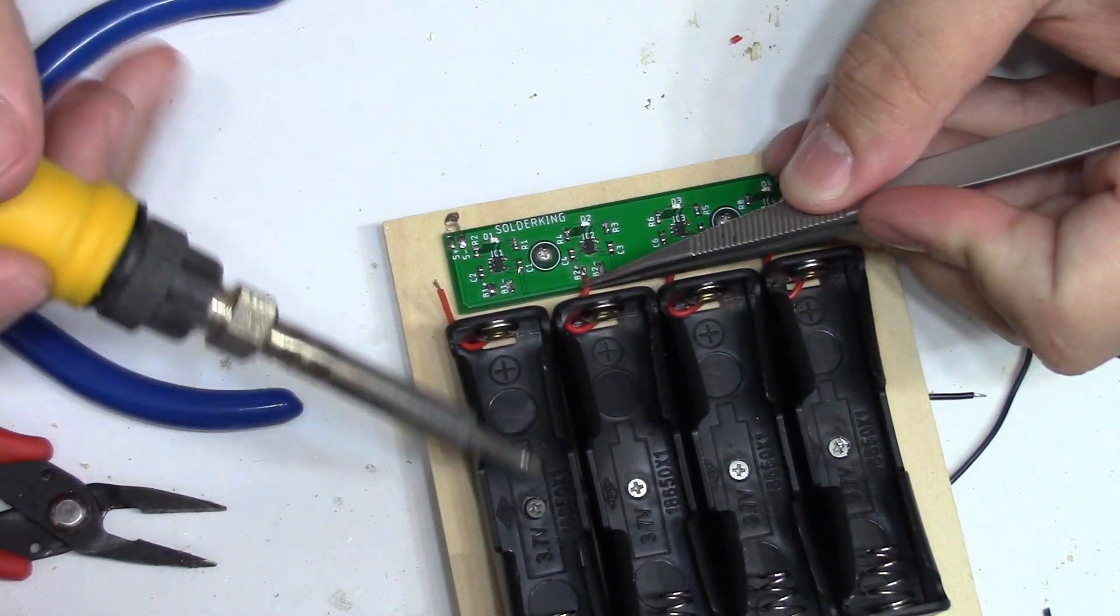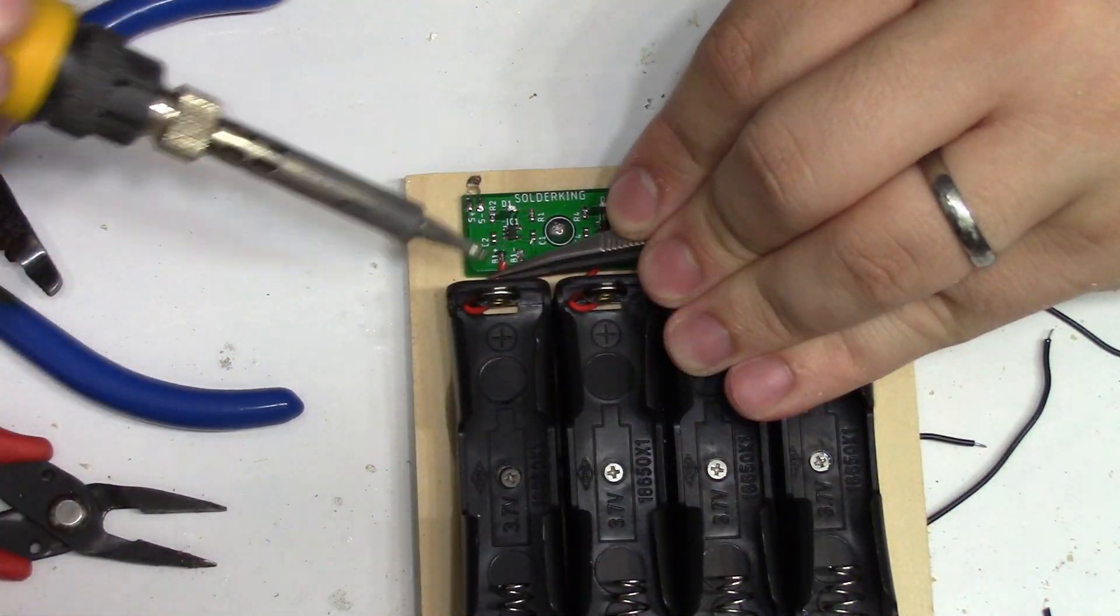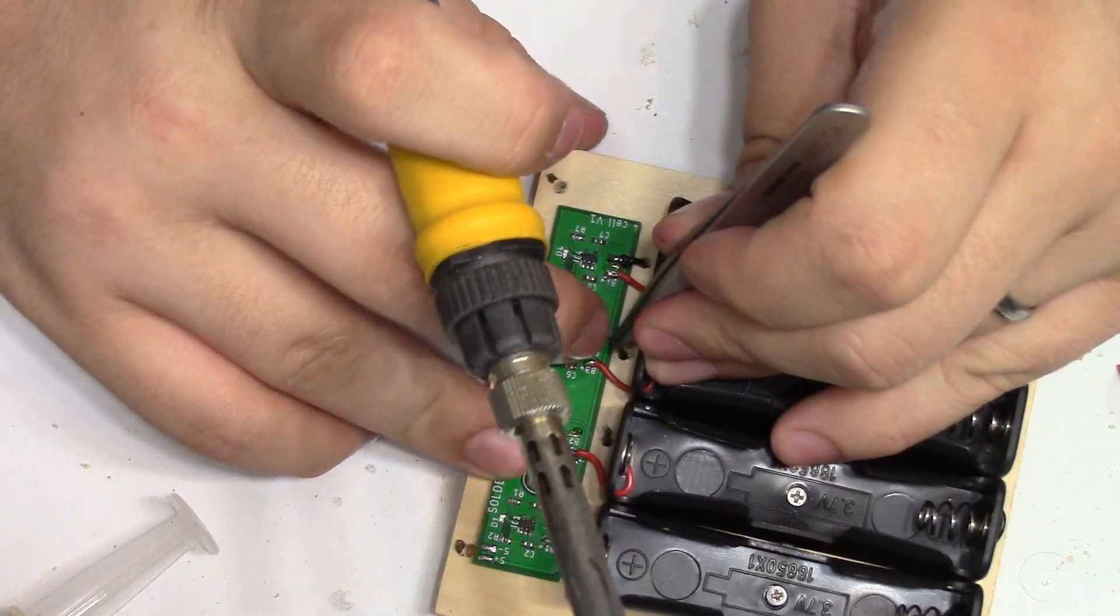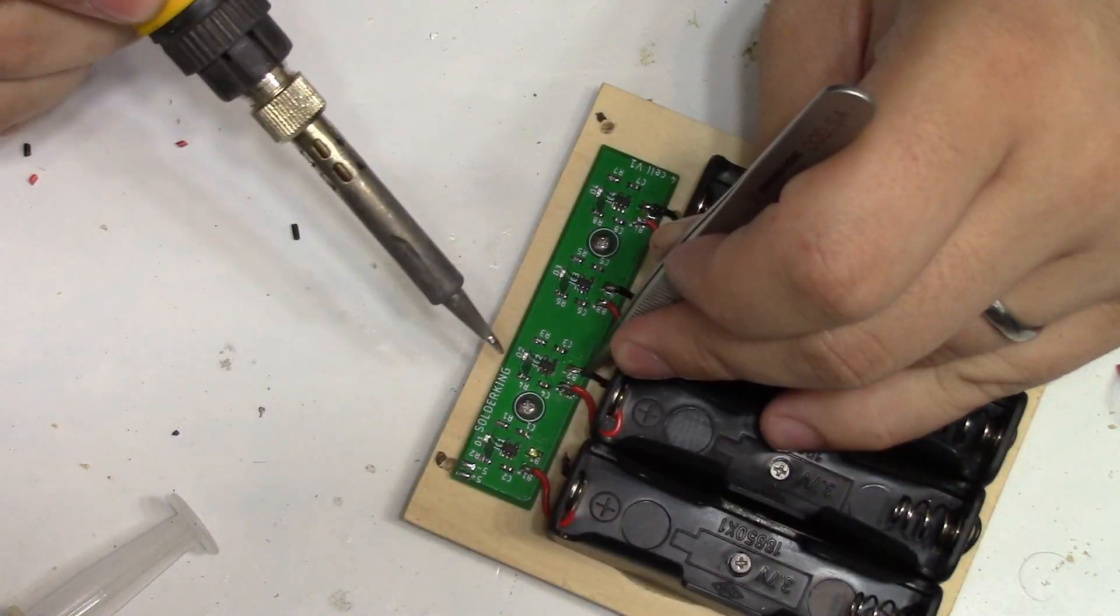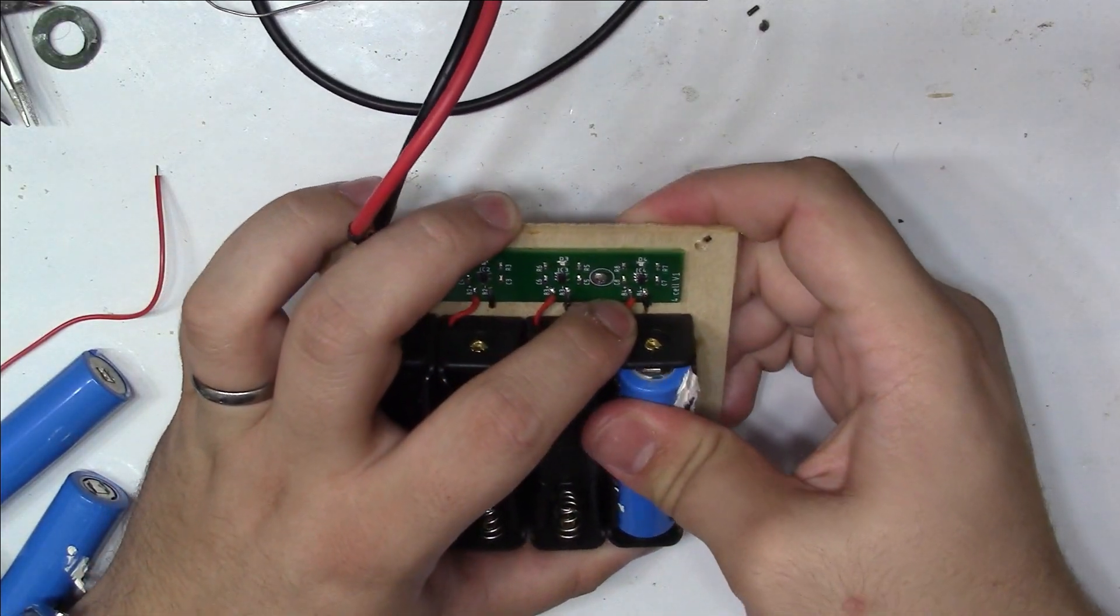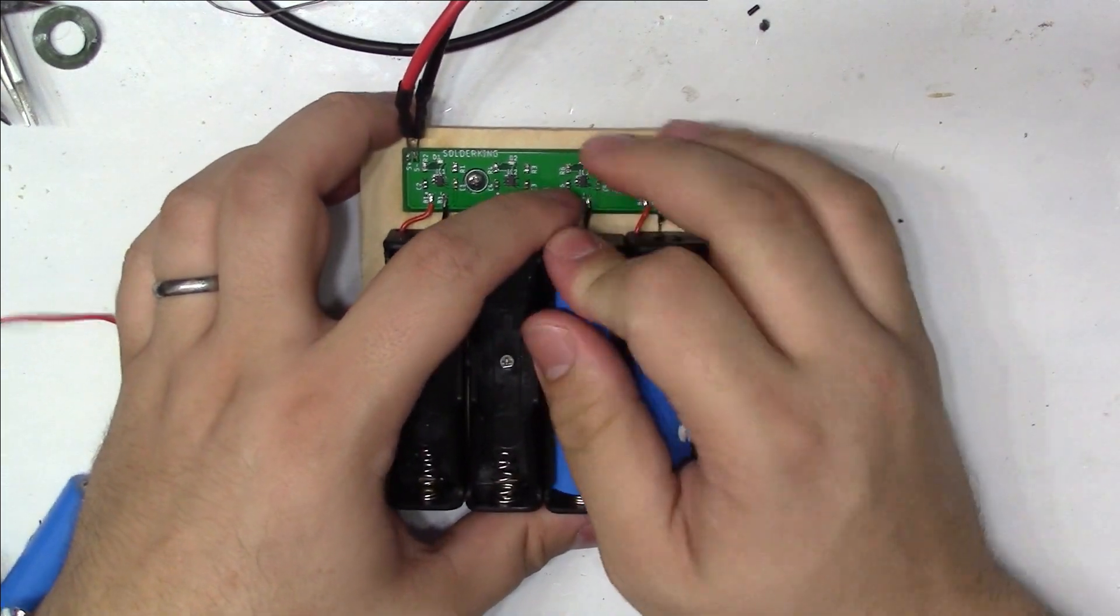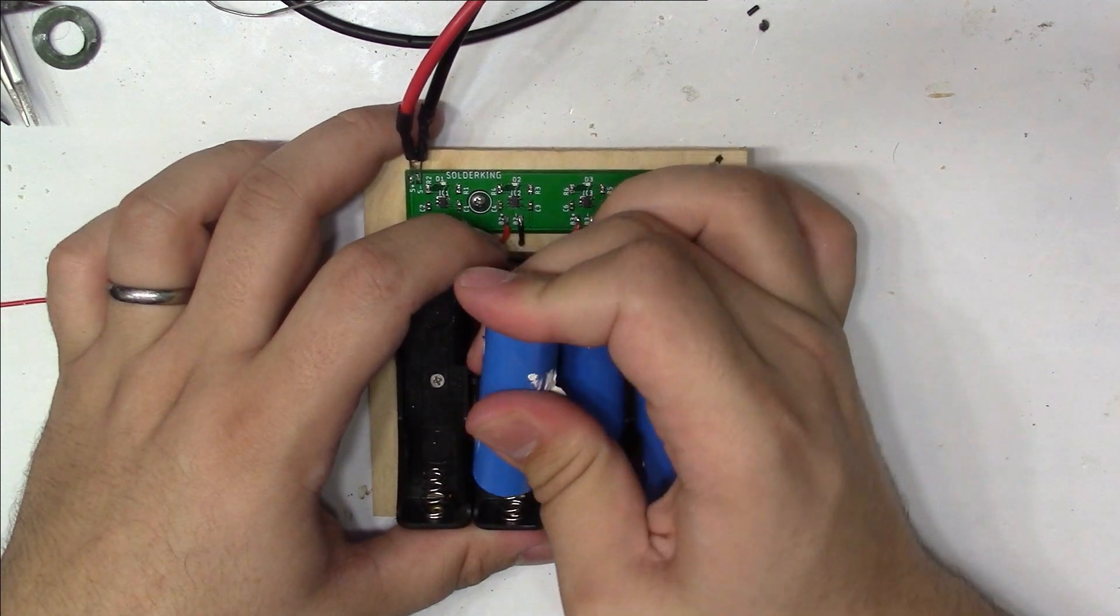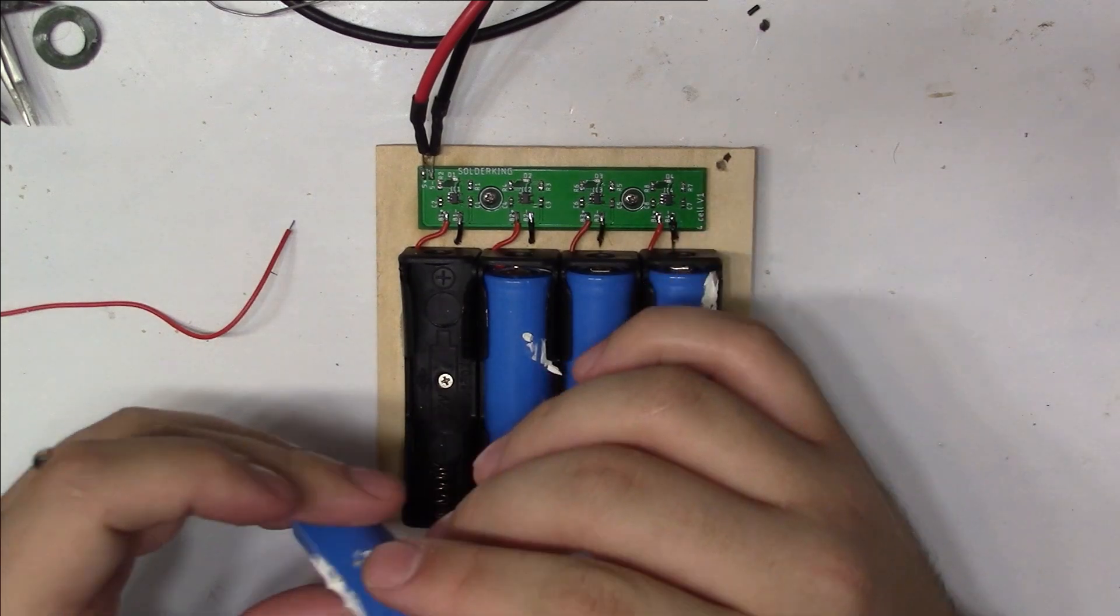Now I can solder the cell wires to the board. Let's get brave and slap some cells into the holder for charging. Before I begin I measured the voltage of the cells to see if it would climb while charging.